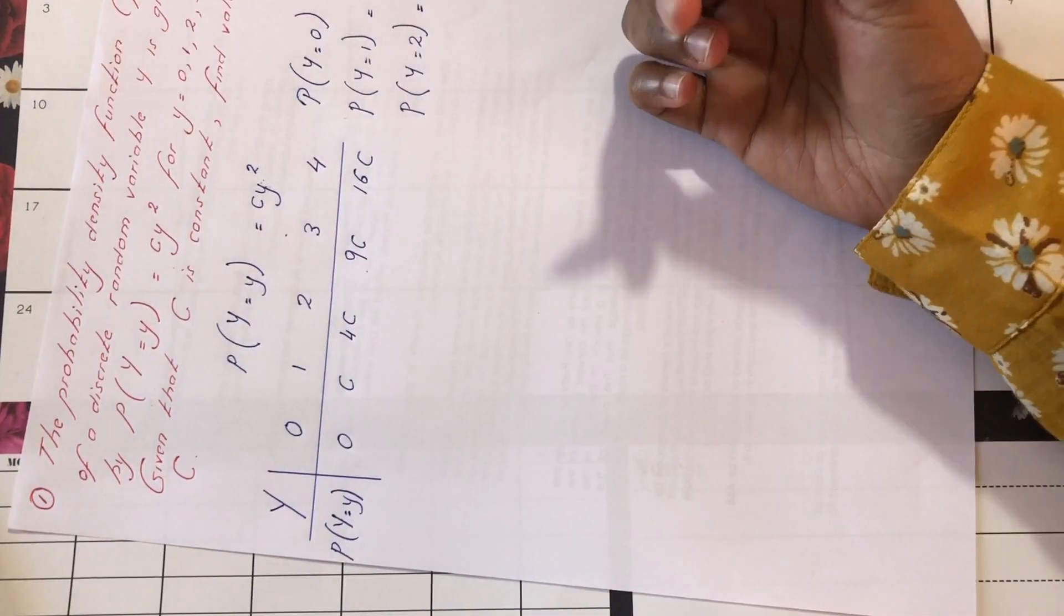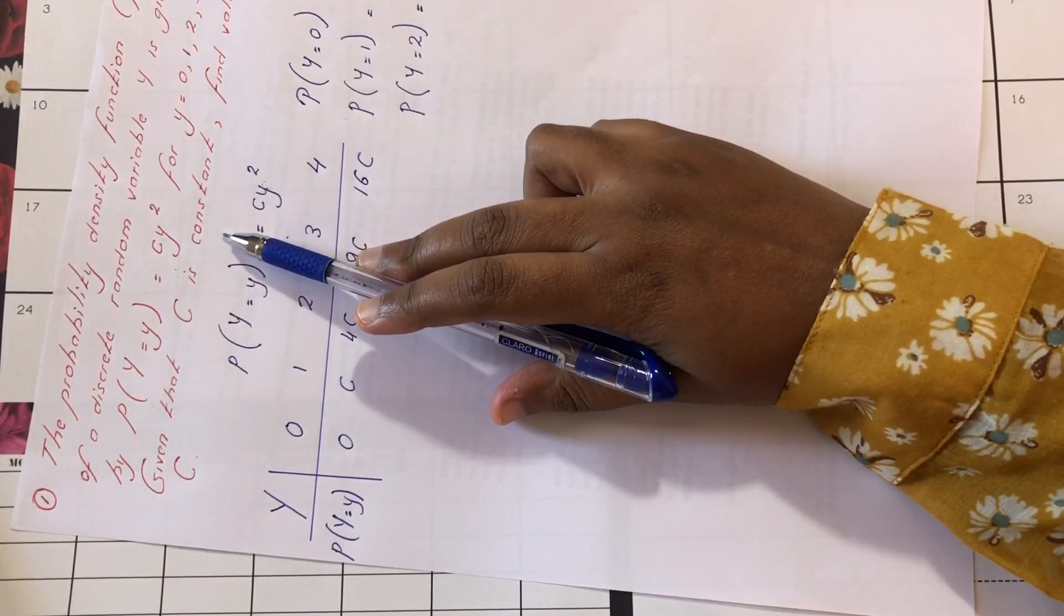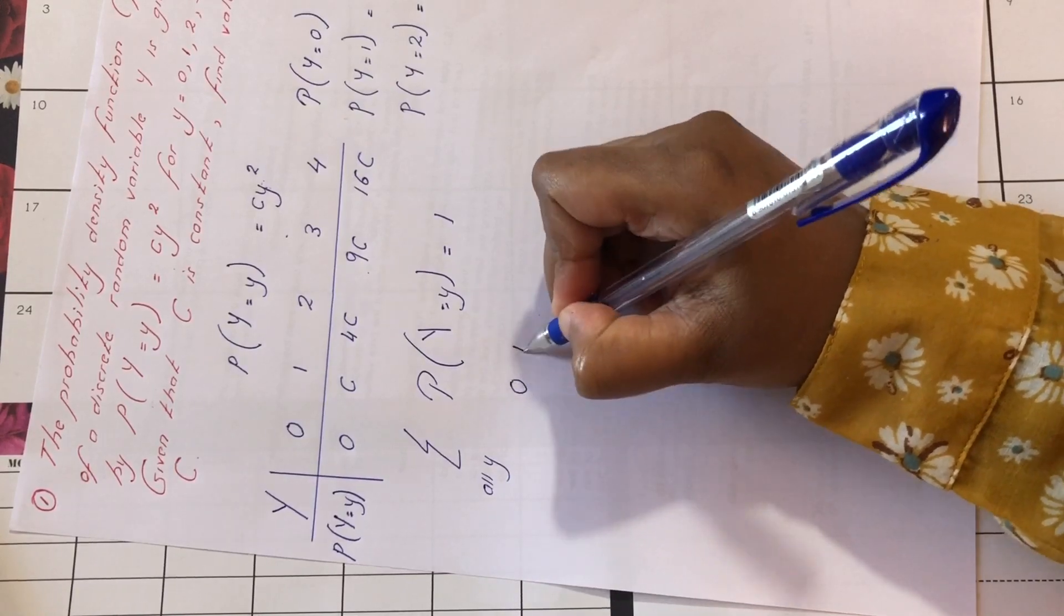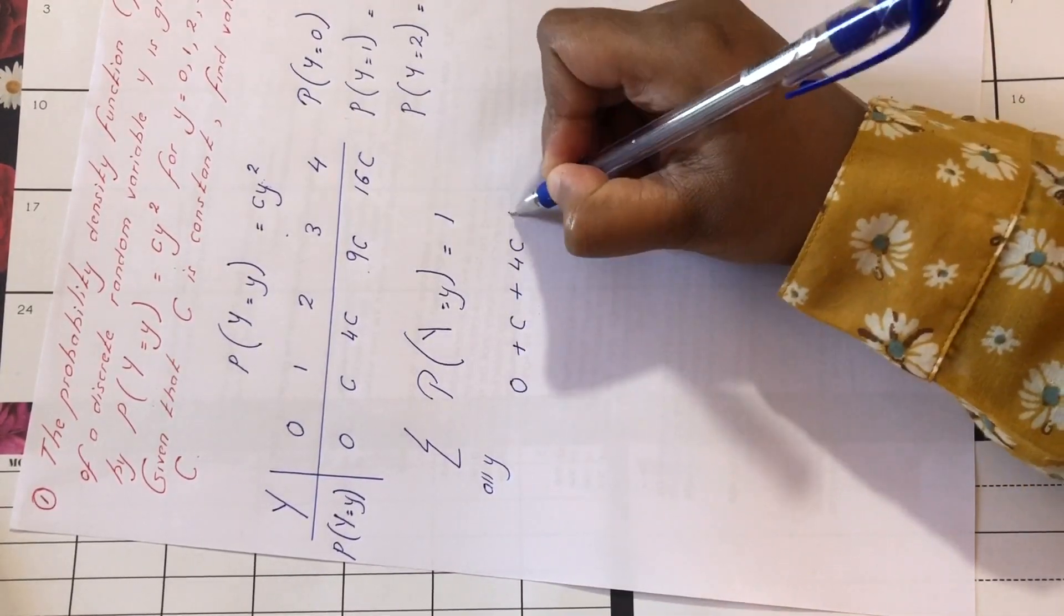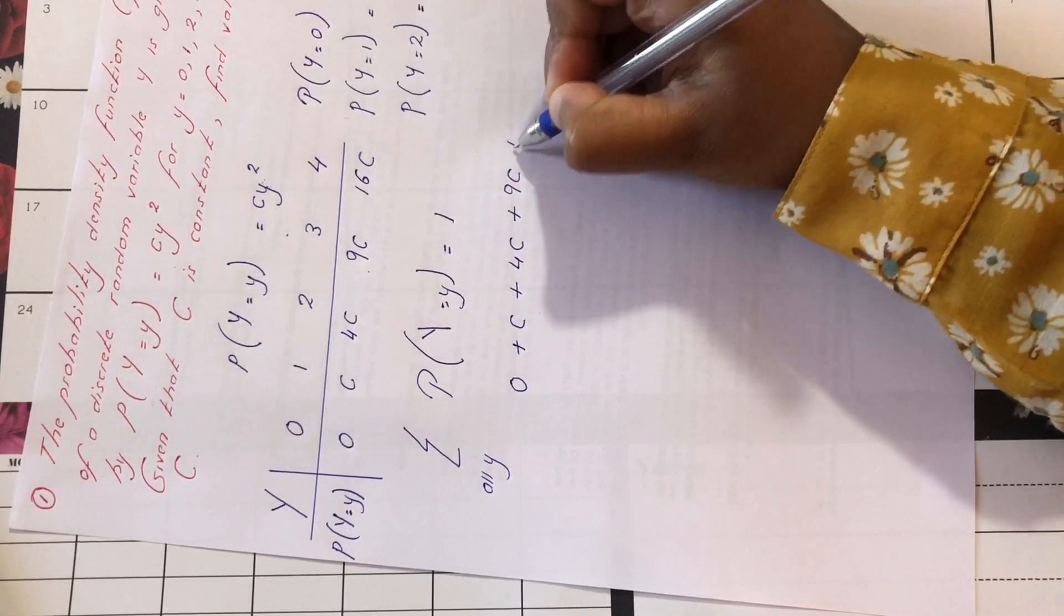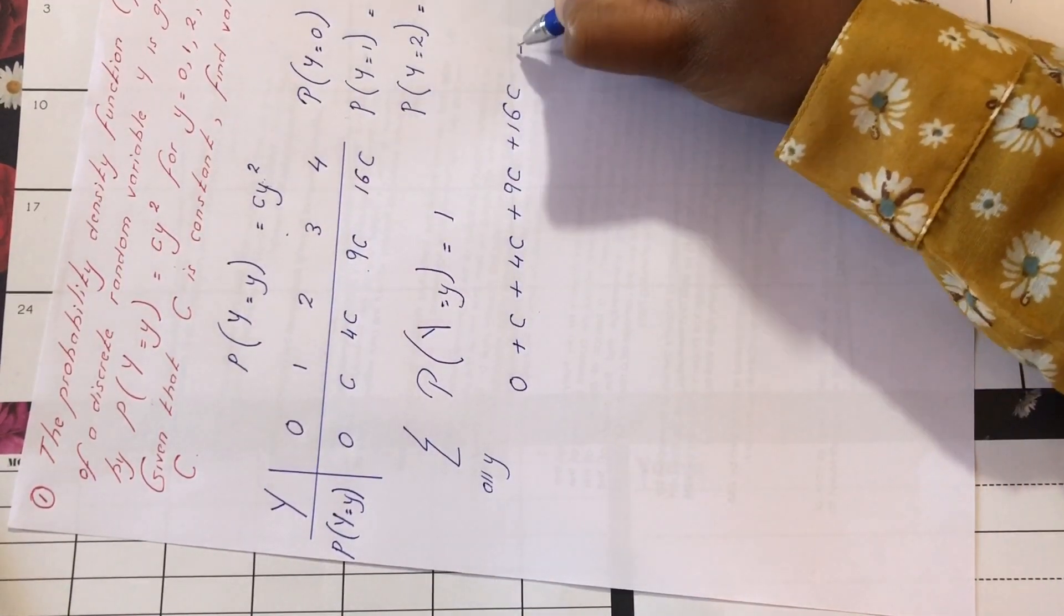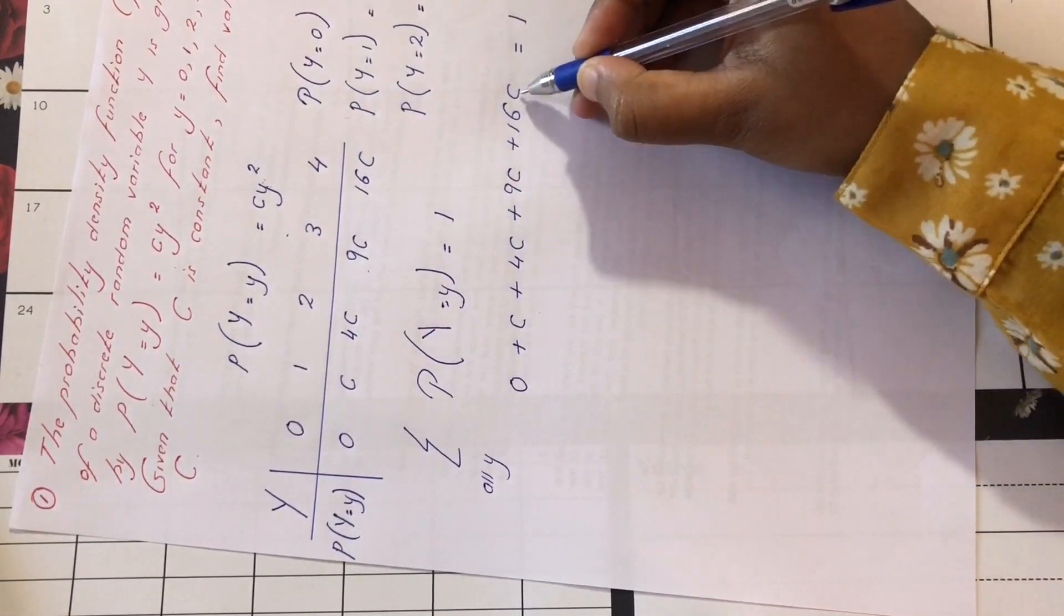So if we add all these probabilities, we should get 1. We are now going to find the value of c. So it means that 0 plus c plus 4c plus 9c plus 16c is equal to 1. So they are all like terms.